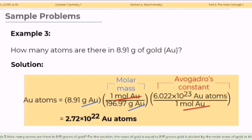Let's have the example number 3. How many atoms are there in 8.91 grams of gold? For the solution, the mass of gold is equal to 8.91 grams gold divided by the molar mass of gold. At this point, the unit grams is cancelled and converted to moles. To convert the number of moles to the number of atoms, we need to include another unit, the Avogadro's constant, which is 6.022 times 10 raised to the power of 23 gold atoms per mole of gold. By simplifying, we have 2.72 times 10 raised to the power of 22 gold atoms.